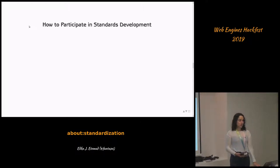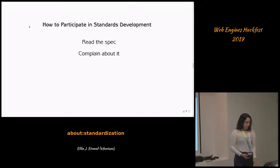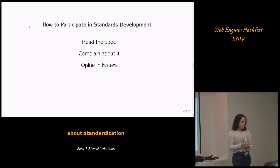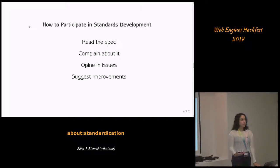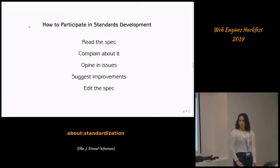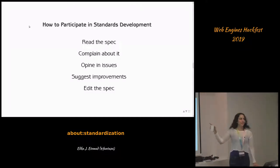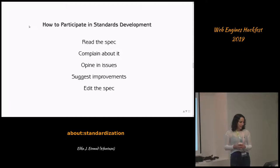Participating in standards development is actually really easy. The first step is to read the spec, and the second is to complain about it. If you want to go up a level, you can have opinions in the issues where complaints are discussed. And if you want to go higher, you can suggest improvements — either expressing an opinion or proposing a fix. The most advanced level is actually editing the spec, but you don't have to do that. You can just do the first two. We strongly recommend reading the spec and complaining about it — that helps the spec become better.